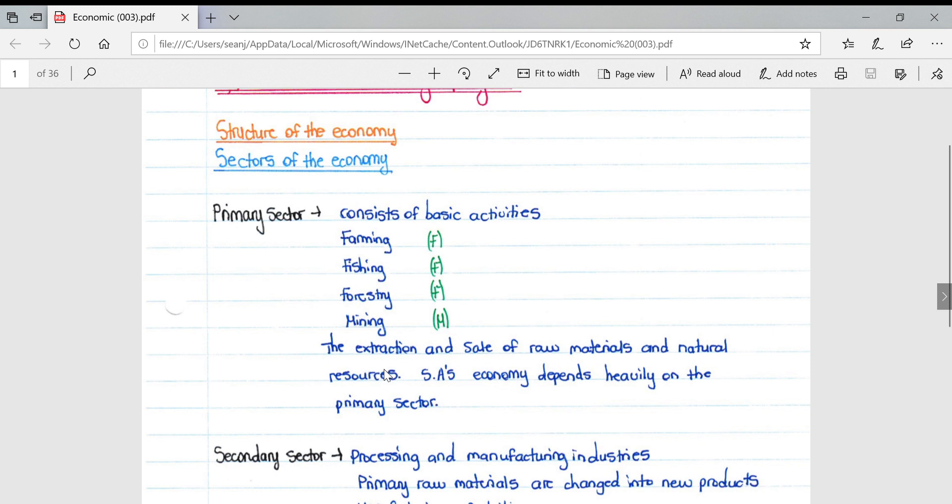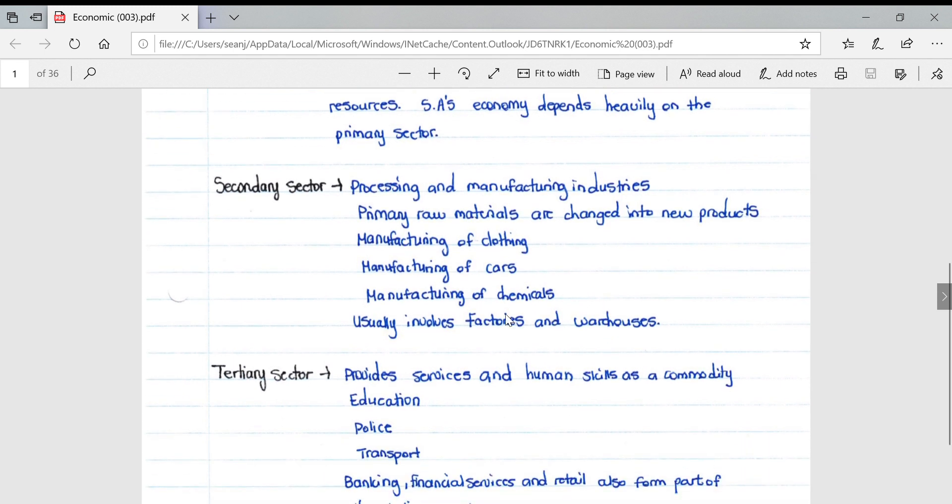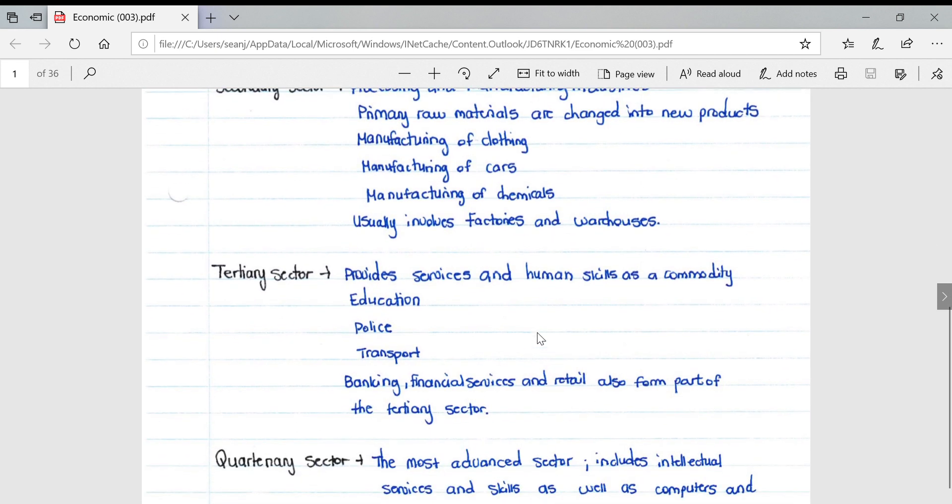South Africa's economy depends heavily on the primary sector. The secondary sector deals with processing and manufacturing industries where primary raw materials are changed into new products - manufacturing of clothing, cars, and chemicals, usually involving some sort of factory or warehouse.